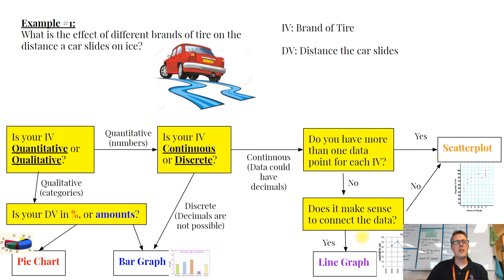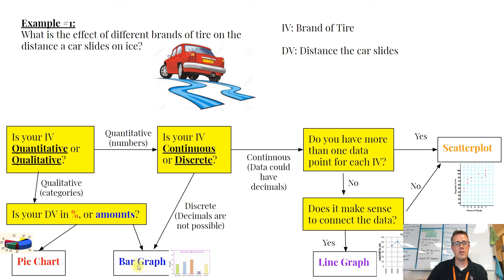Example number one: let's say you wanted to find out what is the effect of different brands of tire on the distance a car slides on some ice. Your independent variable is going to be the brand of tire, and your DV is how far it slides. The brand of tire is not something we can measure in numbers, so it's qualitative. Then we ask: is our DV percentages or amounts? Measuring how far the car slides is a distance — an amount. So that's going to give us a bar graph.